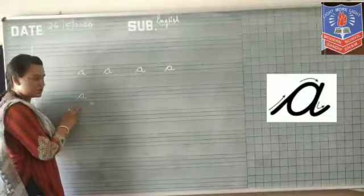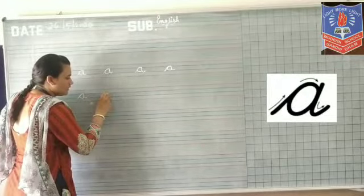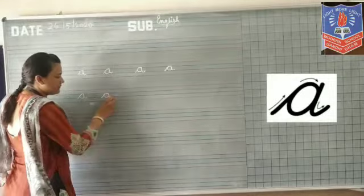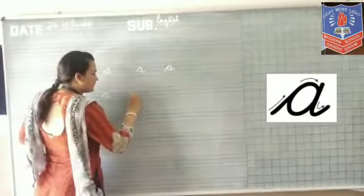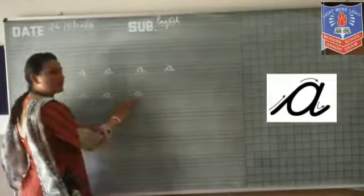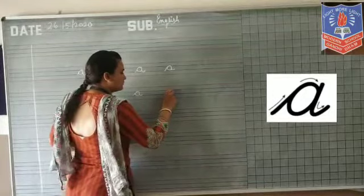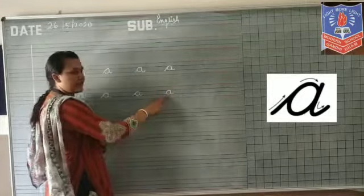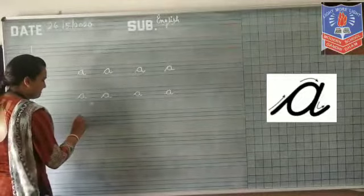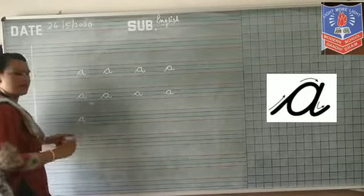Now, go students — do you understand? You can need this movement like this. Here, A — like this. 1, 2. 1, 2.